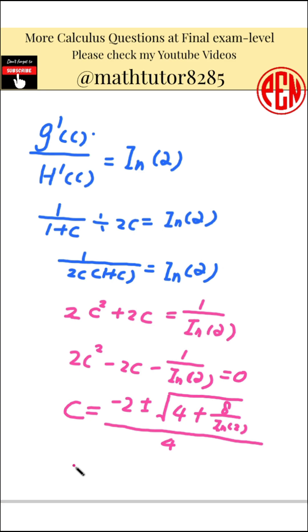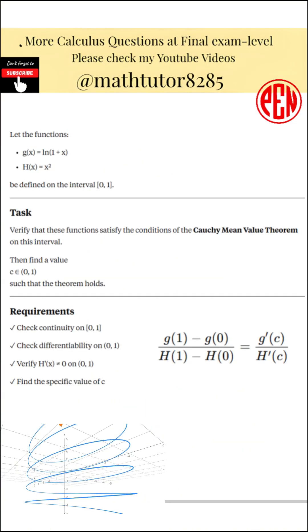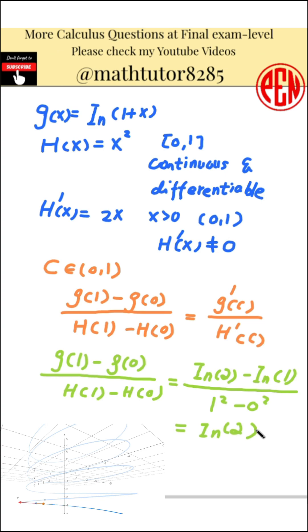Take the positive root only, since c must be in the open interval from 0 to 1. This gives the required value of c that satisfies the theorem. This problem is a gentle introduction to the Cauchy mean value theorem. The first thing to always do is check the assumptions. Make sure both functions are continuous on the closed interval and differentiable on the open interval.